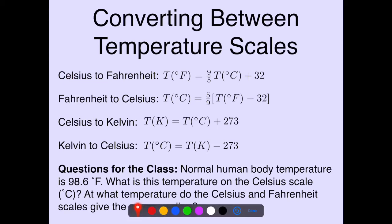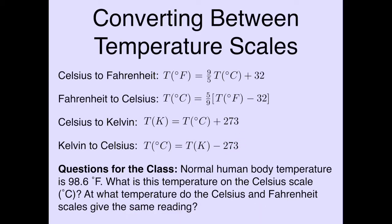To go from Celsius to Fahrenheit: T_F = (9/5)·T_C + 32. Flipping that around to solve for Celsius: T_C = (5/9)·(T_F − 32). Going from Celsius to Kelvin: T_K = T_C + 273. Going from Kelvin to Celsius: T_C = T_K − 273. That's everything we need to convert between the temperature scales.